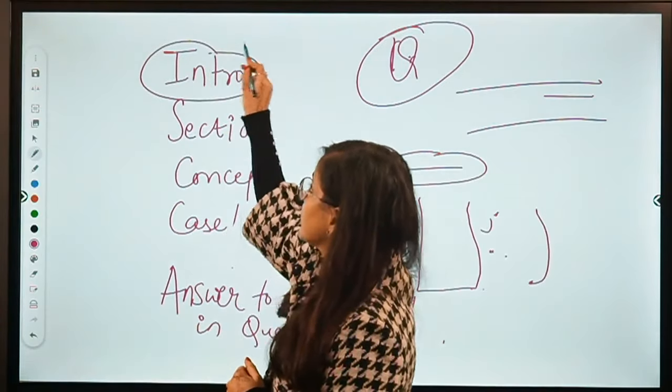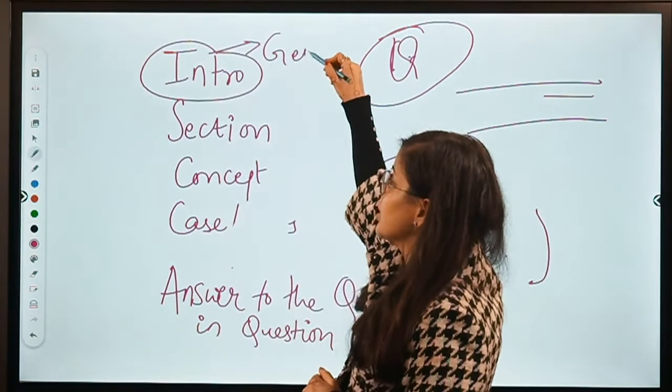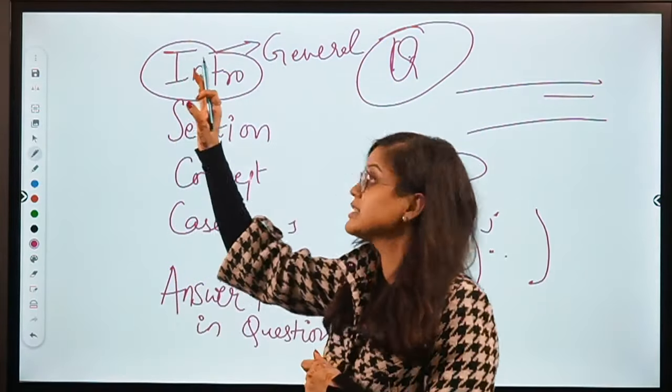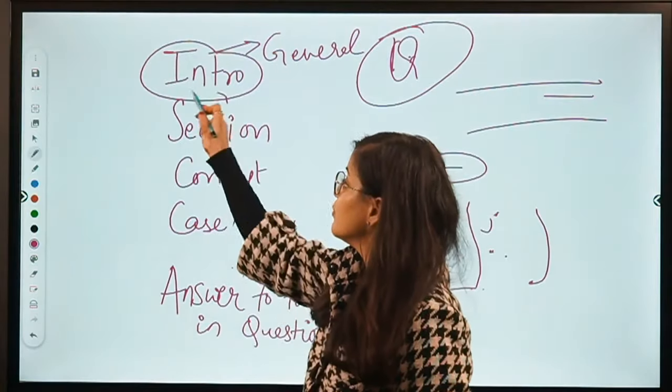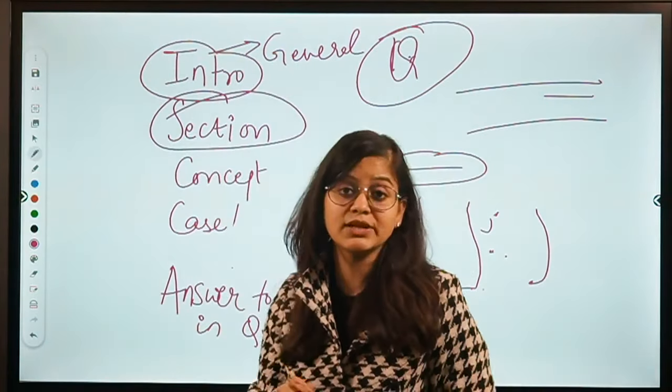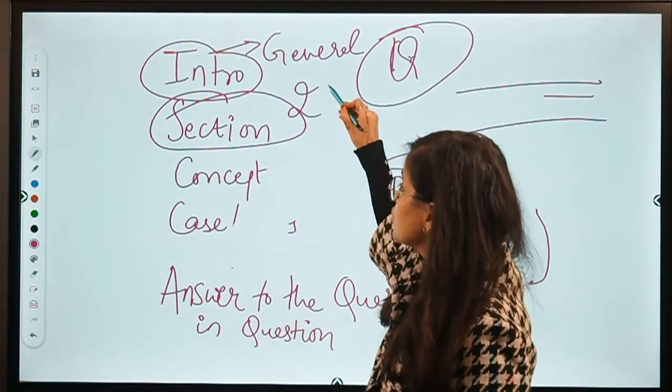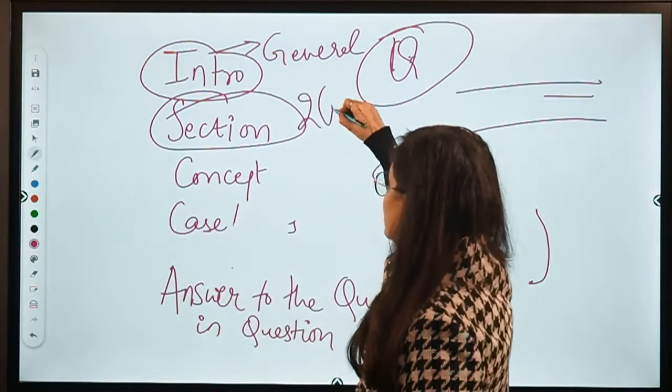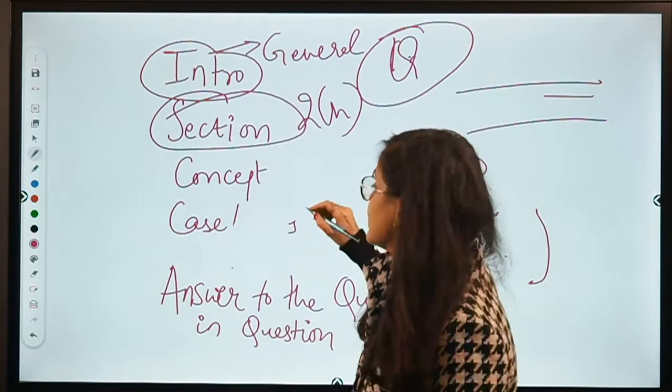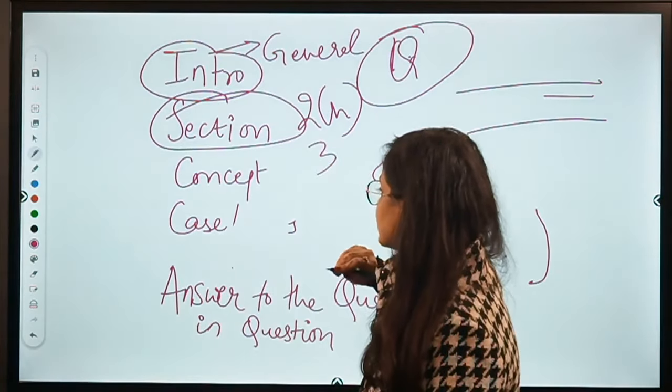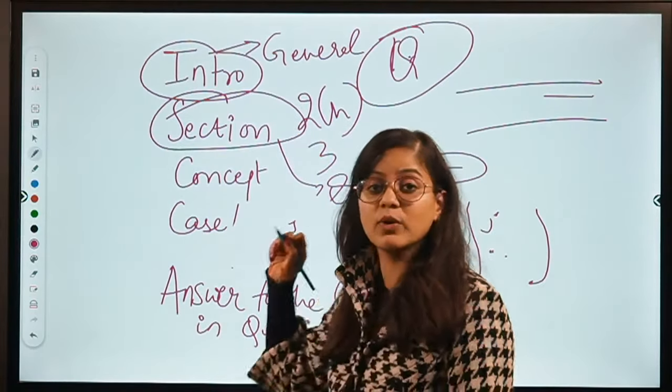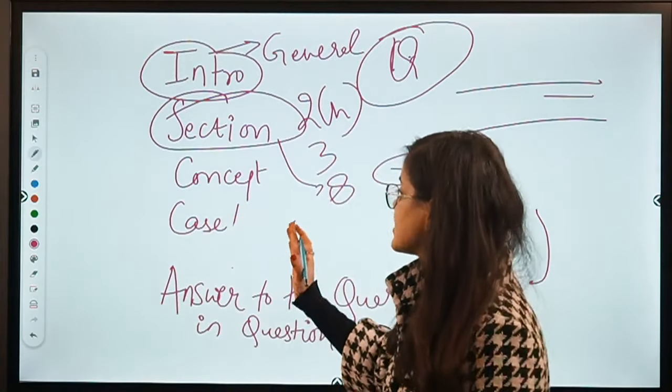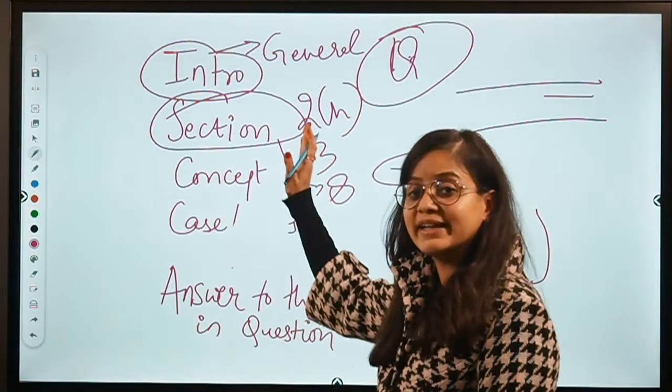Now how we will go about answering this question? When we speak of introduction, we will lay out here what is general offer, what comprises of general offer, what is acceptance. These things we will lay out. Then at the next step, we will move to the relevant sections that we need to consider. We will lay down the definition of contract that is there in section 2H. We will also lay down communication of acceptance is important when as per section 3. We will also lay down section 8 where it speaks how performance of the conditions of a proposal leads to acceptance.